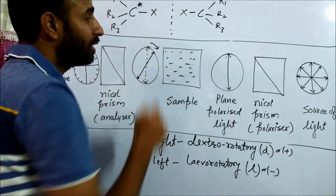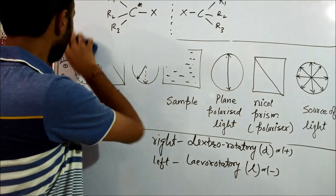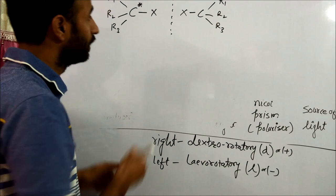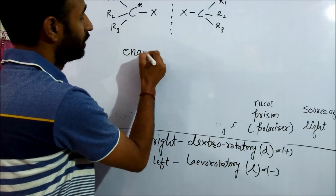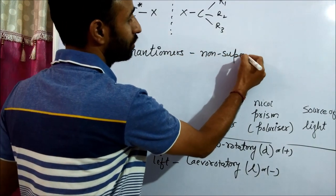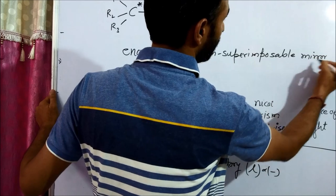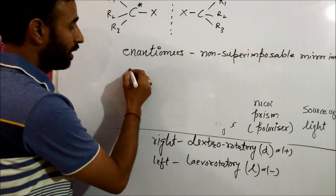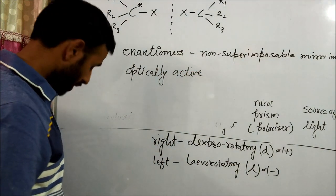These are non-superimposable mirror images. Non-superimposable mirror images are known as enantiomers. What are enantiomers? Non-superimposable mirror images are known as enantiomers and are optically active. They can rotate the plane polarized light.